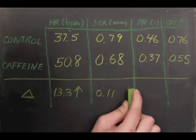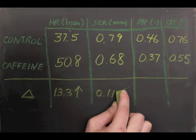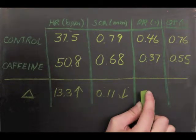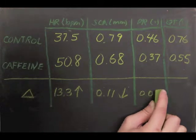However, because of the extreme increase in heart rate, there was also a decrease in filling time, resulting in less stretching of the ventricular wall and a decrease in contraction strength, or SCA.